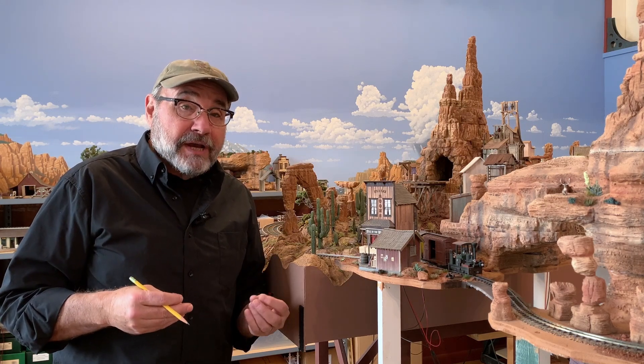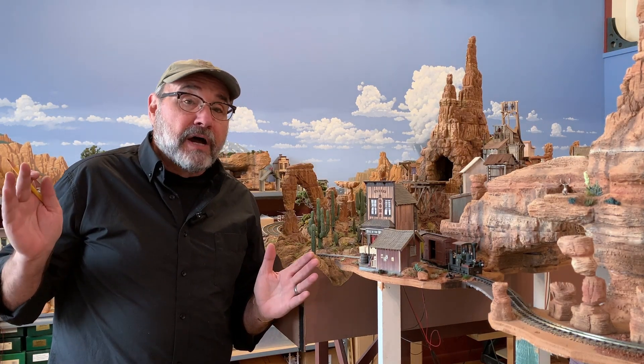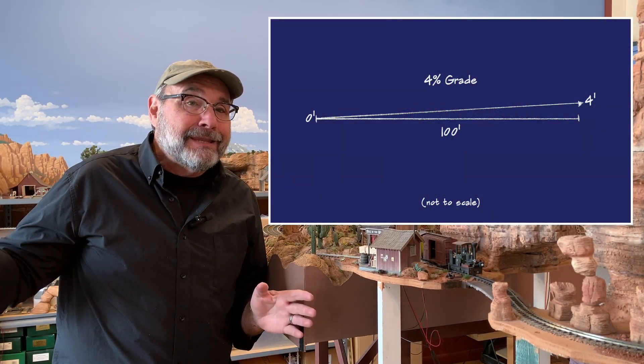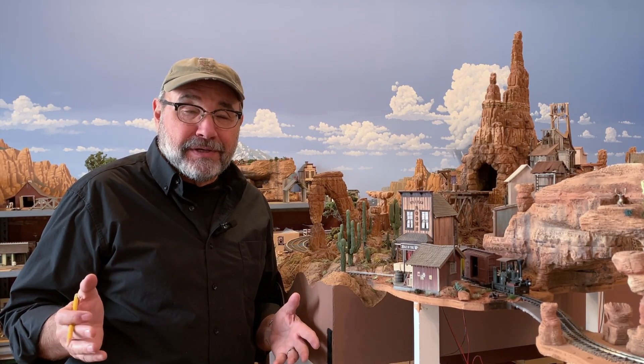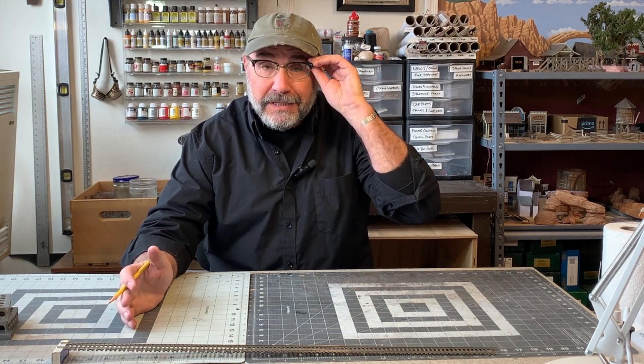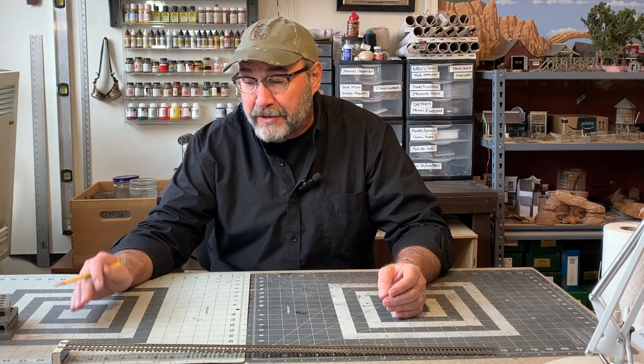There is going to be some middle school level math here today, so please bear with me. Usually a grade is expressed as a percentage. Say you have a run of 100 feet and you want the track to rise 4 feet by the end of that 100 feet. Well, 4 feet is 4% of 100 feet, so that would be expressed as a 4% grade. I will be speaking in imperial units today because that's the way my brain works, but if you come from the metric, scientific part of the world, just translate things into meters and centimeters — the math is all the same, only the units being measured are going to change.